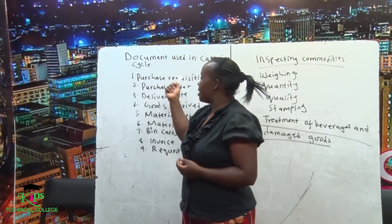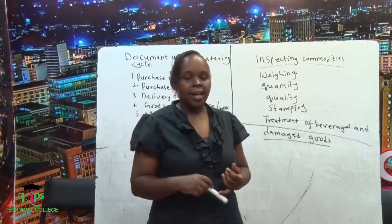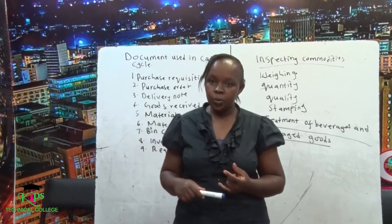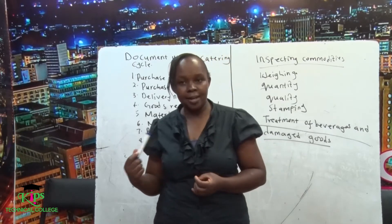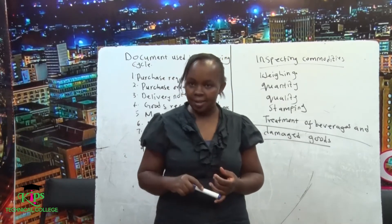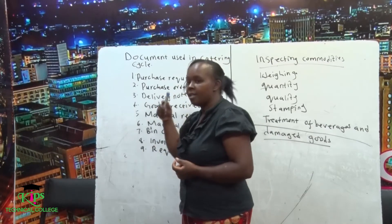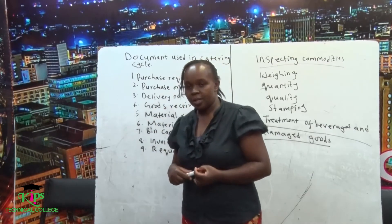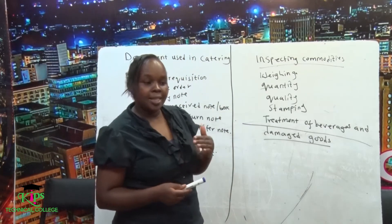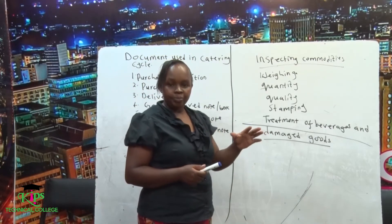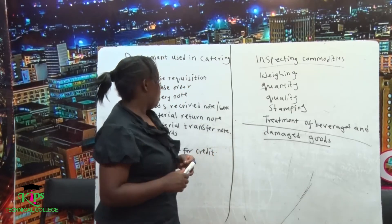The first document that we have is the purchase requisition. Immediately after you have done your menu planning, you are supposed to write a requisition from the food order list. From the food order list is where we get the purchase requisition. A purchase requisition contains a list of ingredients with their quantities that are needed to be bought.